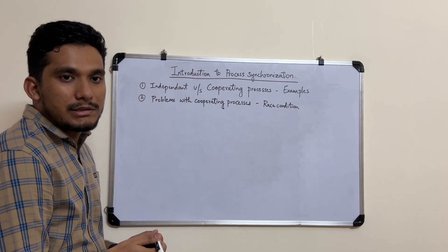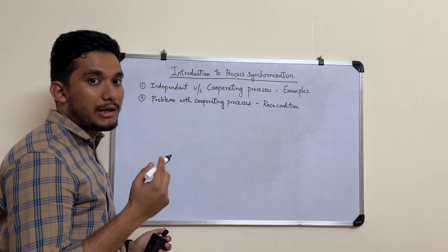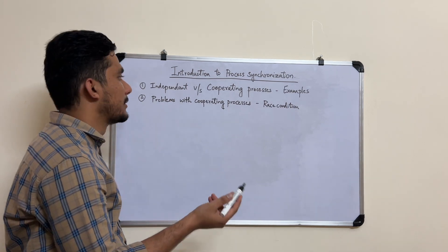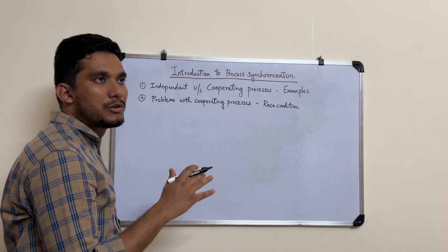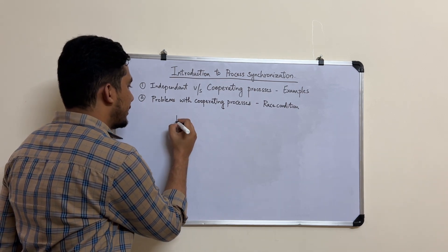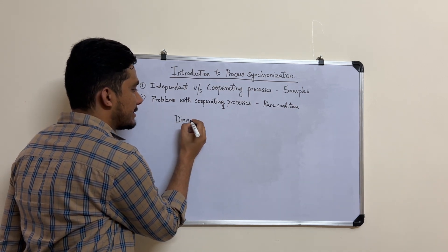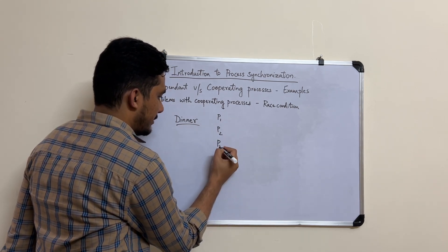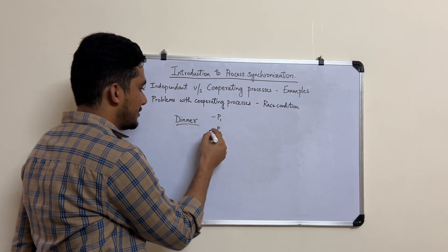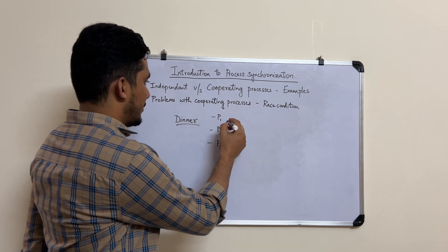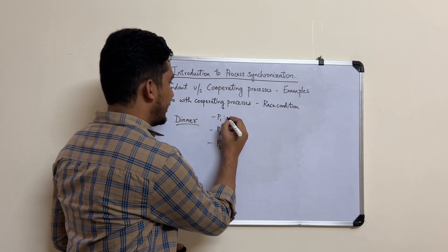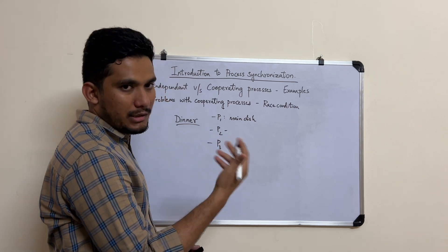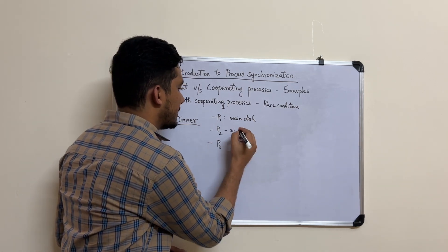Cooperating processes, on the other hand, are the type of processes which get affected by the execution of some other process, or they also affect the execution of some other process. For a layman example, consider the task of dinner preparation with three processes P1, P2, and P3 — two parents and a child. The task of P1 is to create the main dish, and P2 is creating a side dish.